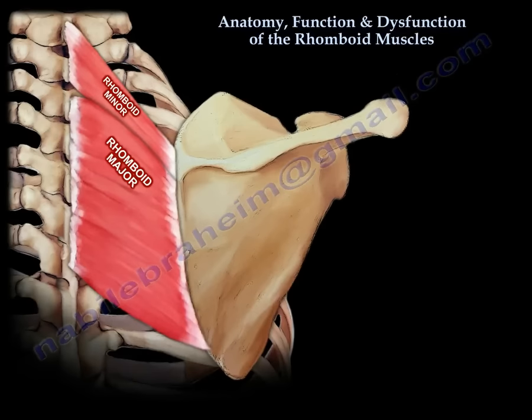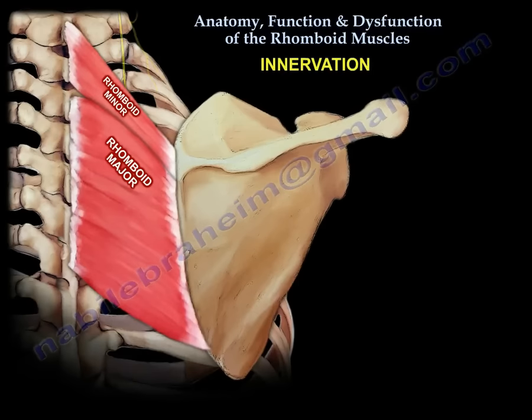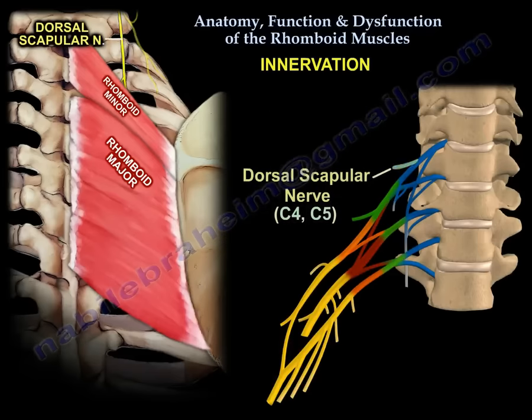Nerve supply: the dorsal scapular nerve, C4 and C5.